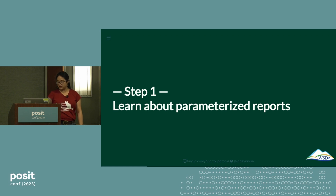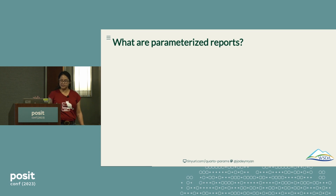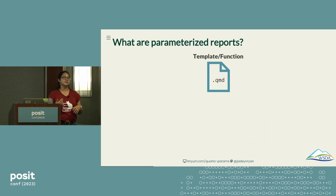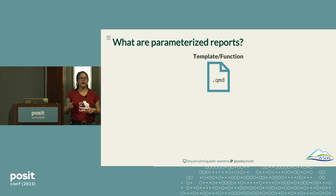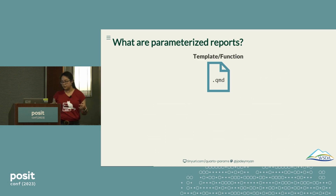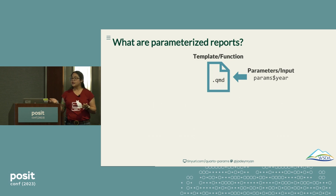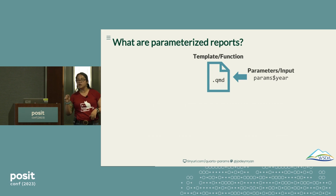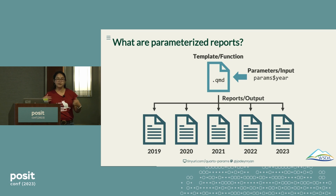Step one is learning about parameterized reports. What is it? It's essentially a template report with placeholders where you can fill in whatever values you need. It really helped me to think of parameterized reports as functions — like really complex functions. Imagine you have a Quarto file reporting something for every single year. This template takes in parameters as function inputs. So instead of going through and changing 2019 to 2020 to 2021, you put in `params$year`. The output of your function is these reports for every single year, without copying and pasting. It's amazing.